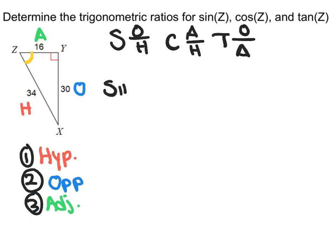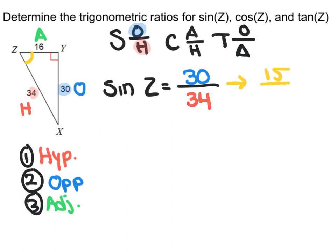So if I want to write all three ratios: for sine of Z, we know that sine is the opposite on the top. So filling in my ratio, the opposite is 30, so I can fill in a 30 on the top, and the hypotenuse is 34 on the bottom. So it'd be 30 over 34, and if I try to simplify that, 30 over 34 would simplify to 15 over 17.